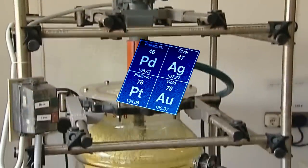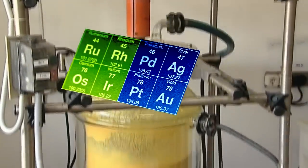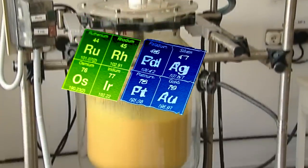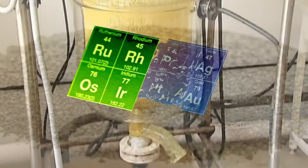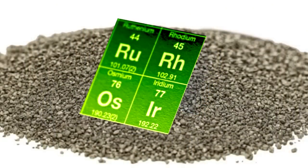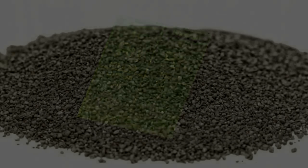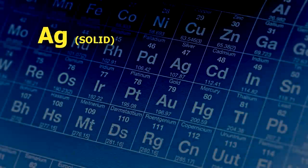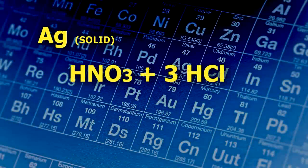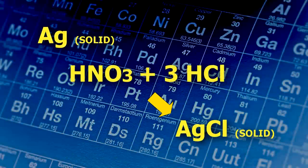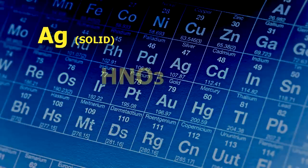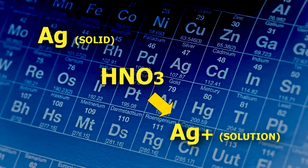The other platinum group metals, however, do not dissolve in aqua regia, so it can be used to separate these groups. Although silver also dissolves in aqua regia, it immediately precipitates to silver chloride, so does not go into solution. Nitric acid alone is used to dissolve silver.